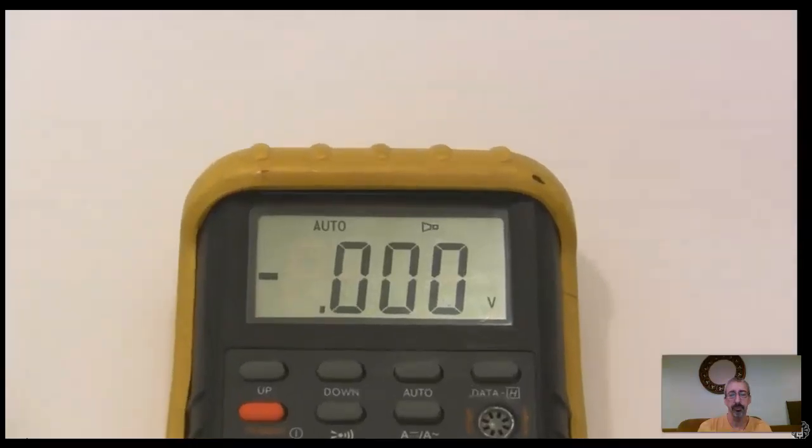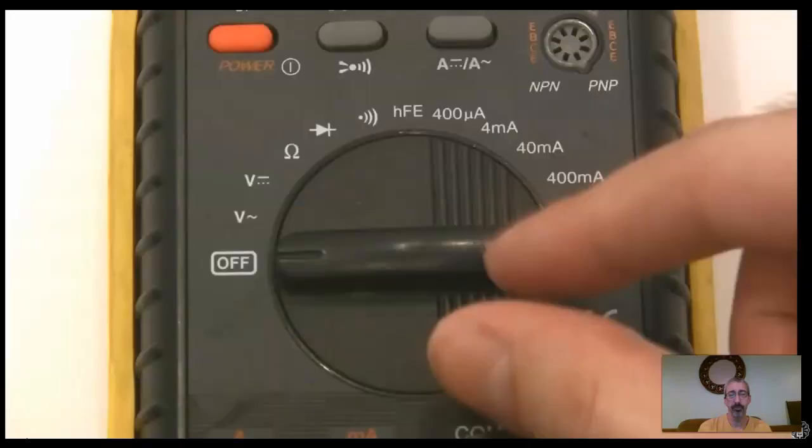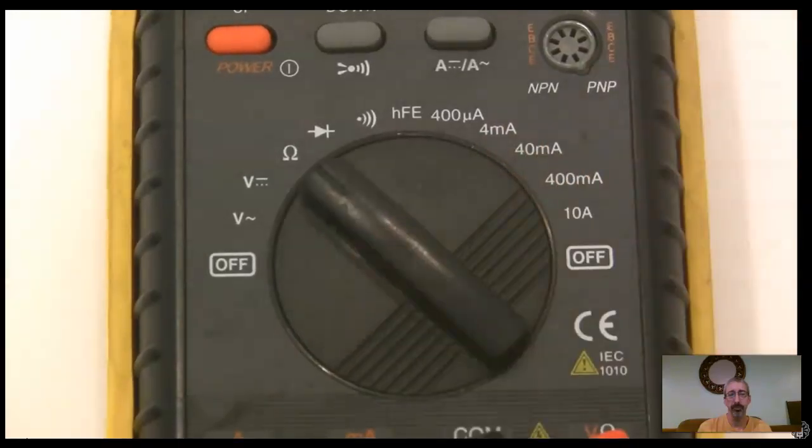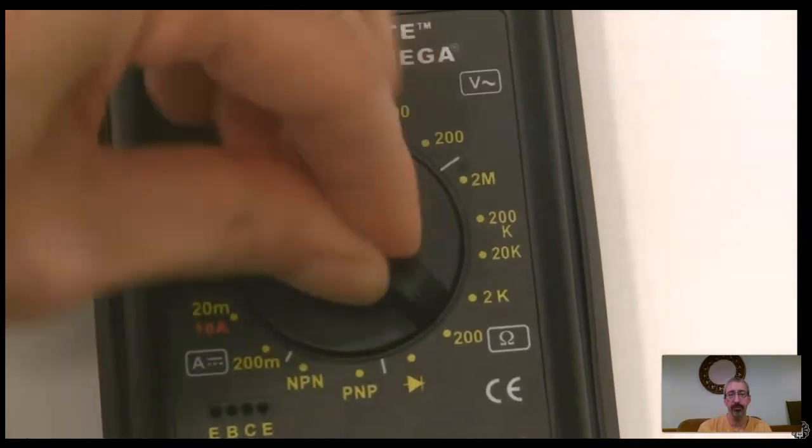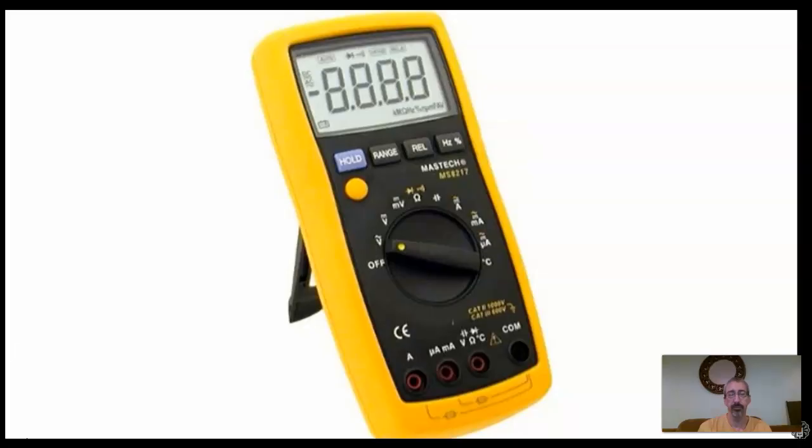Next, the multimeter should have a digital display, not that old school analog crap, and it should have auto-ranging functionality for as many things as possible. Trust me, you don't want to waste your time screwing around with manual ranging. If you're too lazy to shop around, just get this one. Fifty bucks, it'll do everything you need, and you won't outgrow it any time soon.